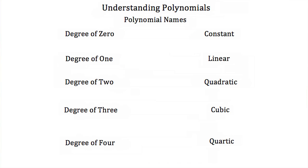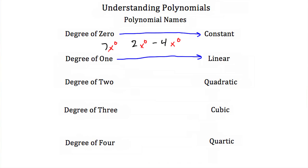The last thing we have to talk about are polynomial names. There are several low-degree polynomials that have special names. If we have a degree of 0, we call it a constant. Examples would be 7, 2, or negative 4, because these can all be multiplied by x to the 0, and x to the 0 is equal to 1. If we have a degree of 1, we call it a linear polynomial. For example, 3x is a linear polynomial, and 7x minus 2 is a linear polynomial, because the highest degree is just 1.